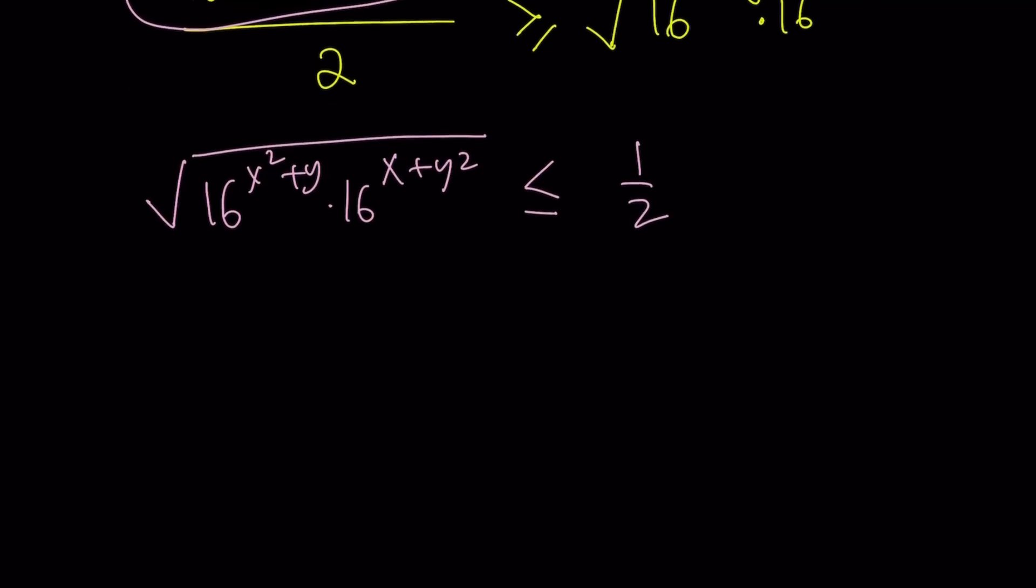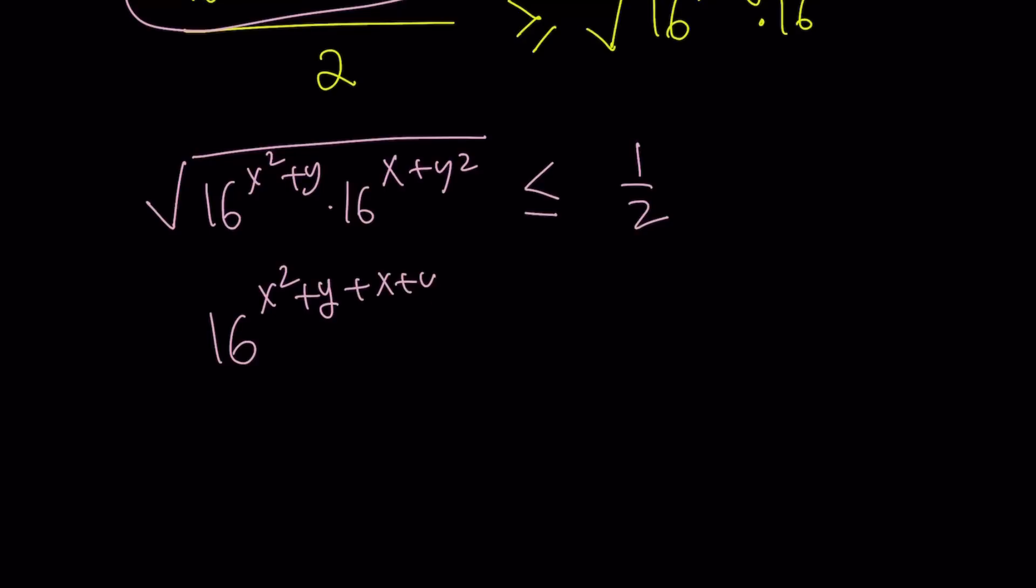Now, what can I do with this inequality? I'm trying to solve an equation. I don't want an inequality. Let's see what we can do. First of all, we can go ahead and combine the exponents, right? And square both sides. So let's go ahead and square both sides first. Or I'll add the exponents first. And then I'll square both sides.